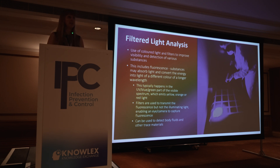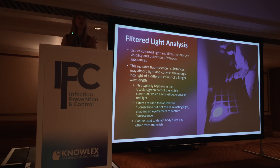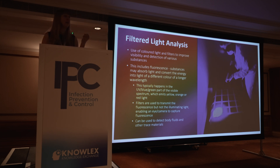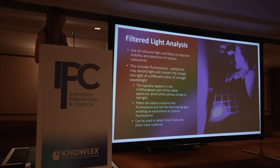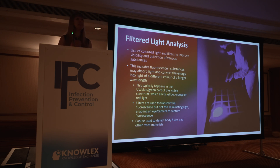In case you're wondering what filtered light analysis is: essentially, if you use coloured lights you can sometimes enhance the visibility of a substance or material, and by filtering the lights you can see it more clearly. You can also initiate fluorescence of substances by shining different coloured lights at them — typically ultraviolet, blue, or green lights. That substance absorbs the light, converts the energy, and emits it at a longer wavelength, producing a fluorescent glow. Filters and goggles are used to see what's fluorescing rather than just the light — there's also a health and safety aspect to that.